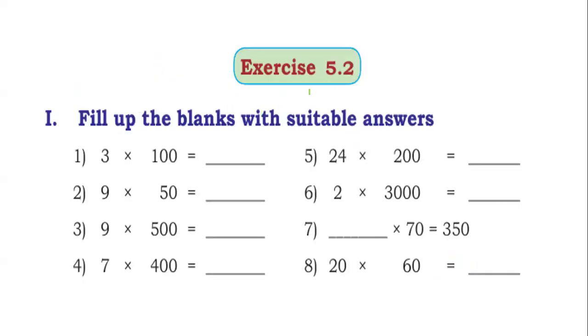Exercise 5.2. Fill up the blanks with suitable answers. 3 into 100 is 300. 9 into 50: 9 into 5 is 45, right hand side 1 zero, put zero here. 450 is the answer.